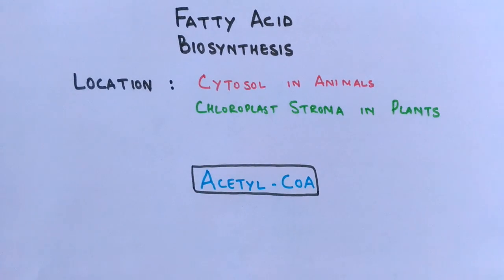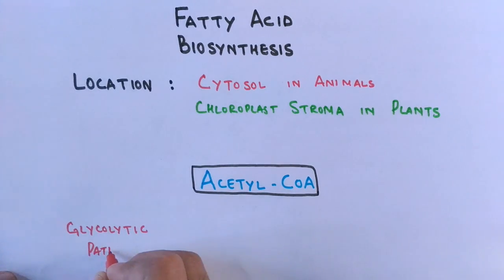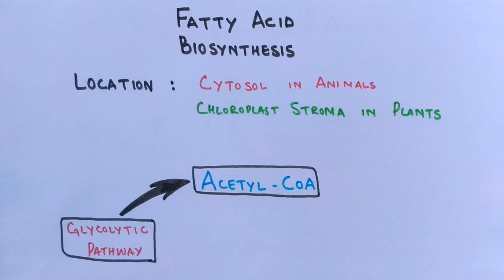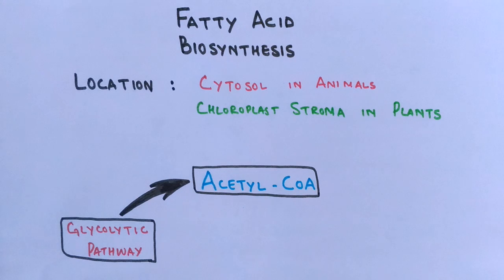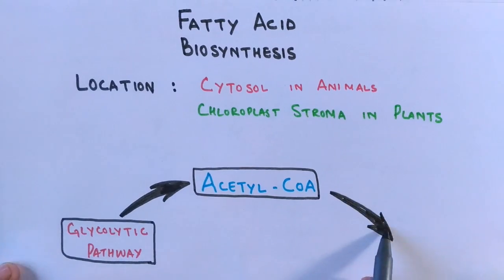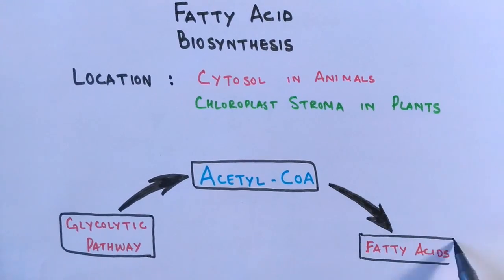Fatty acids are synthesized from a molecule called acetyl CoA, or acetyl coenzyme A. This acetyl CoA is a product of the glycolytic pathway. At the end of glycolysis we get pyruvate, and since glycolysis occurs in the cytoplasm, this pyruvate is then transported to the mitochondria for the production of acetyl coenzyme A. Inside the mitochondria, pyruvate releases acetyl coenzyme A, which the cell can then use to synthesize fatty acids.